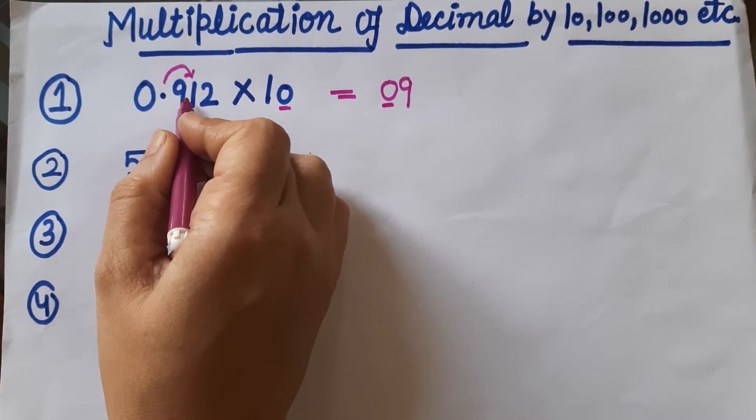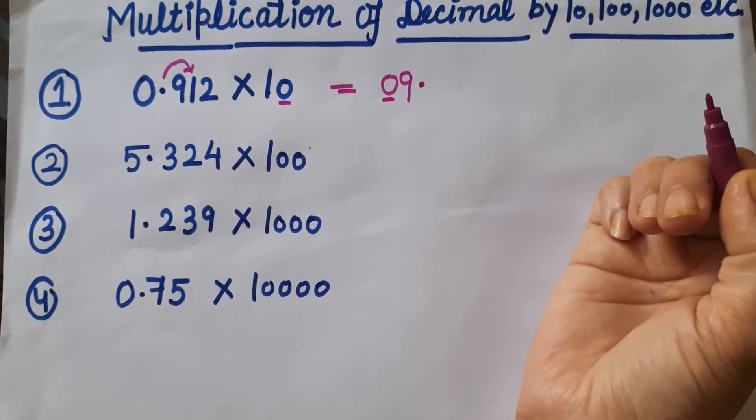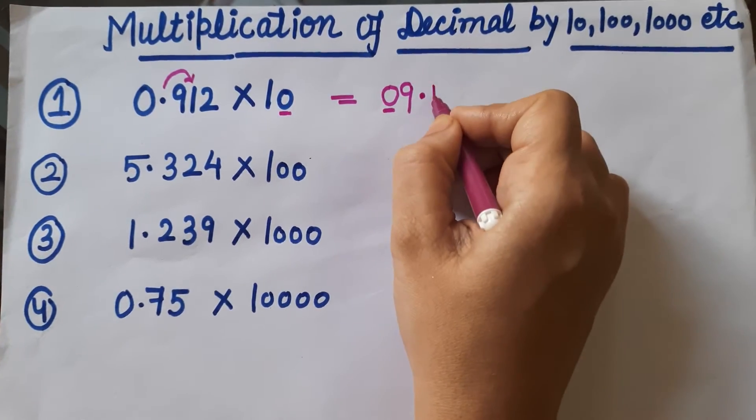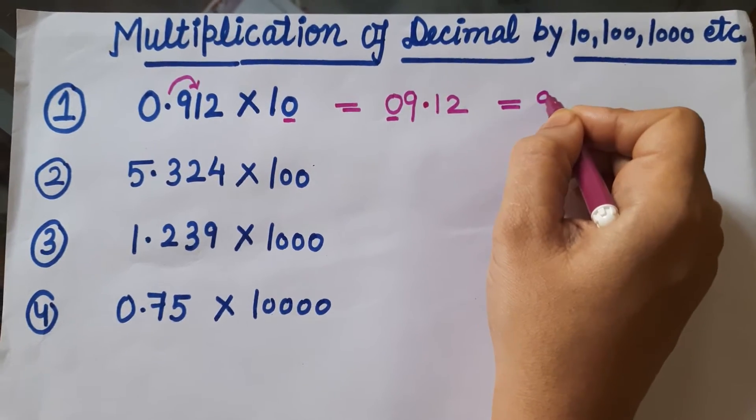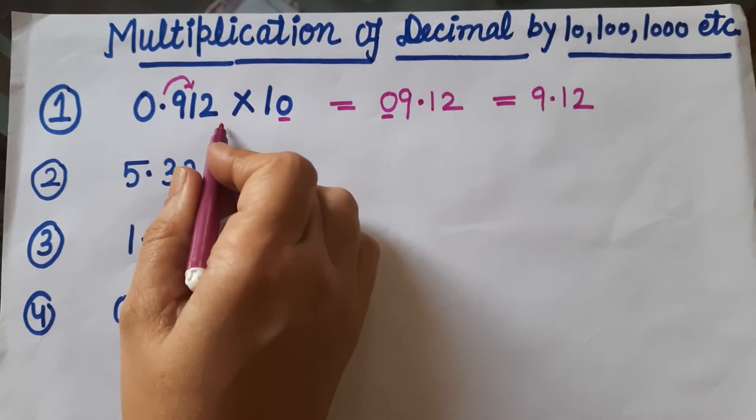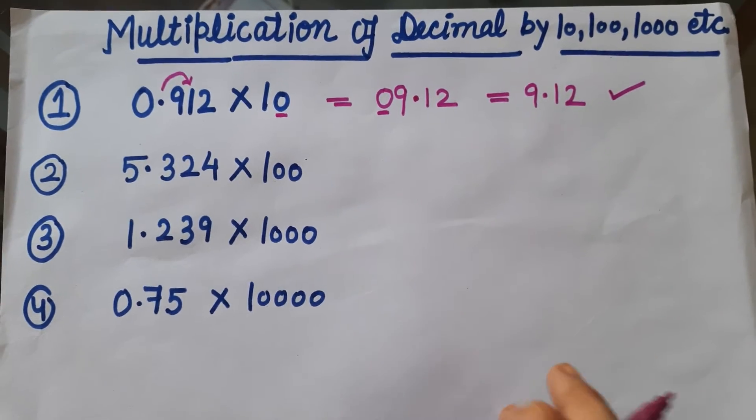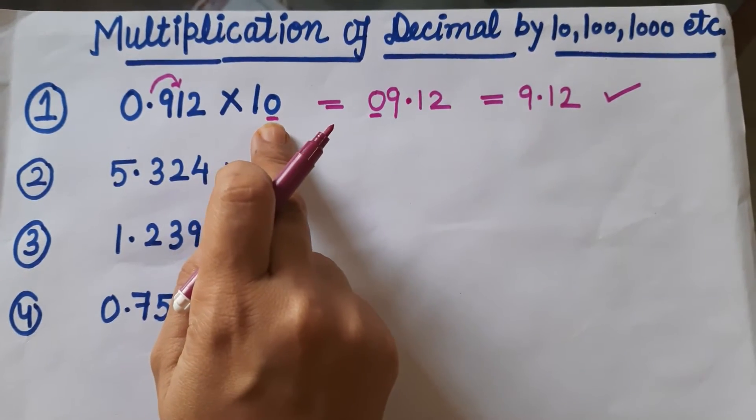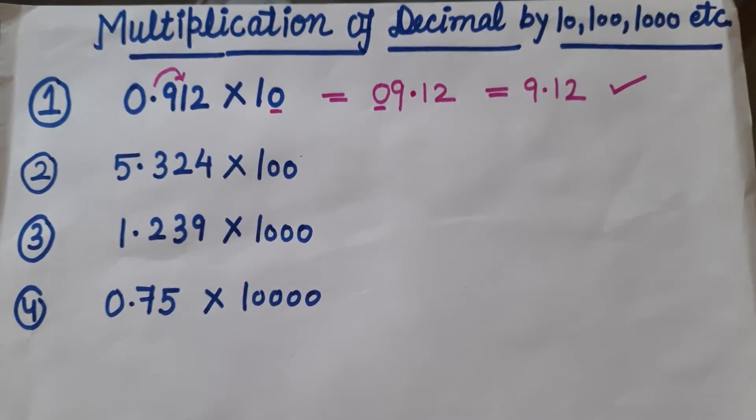Now this decimal will move to the next after 1 digit, means 9 decimal 1 2, or you can write 9.12. That is the answer of the first question. It is very easy—just count the number of zeros and shift the decimal.